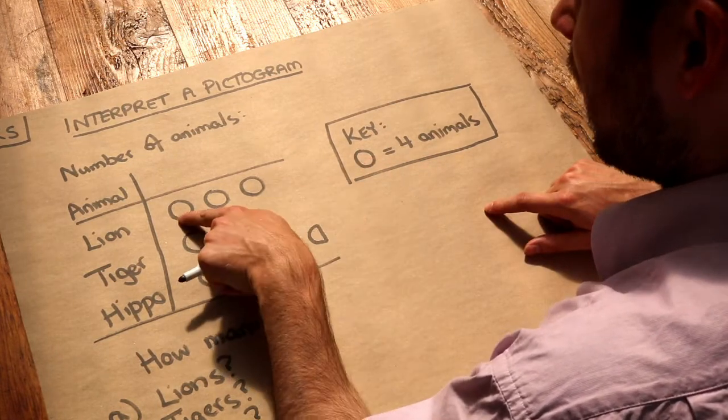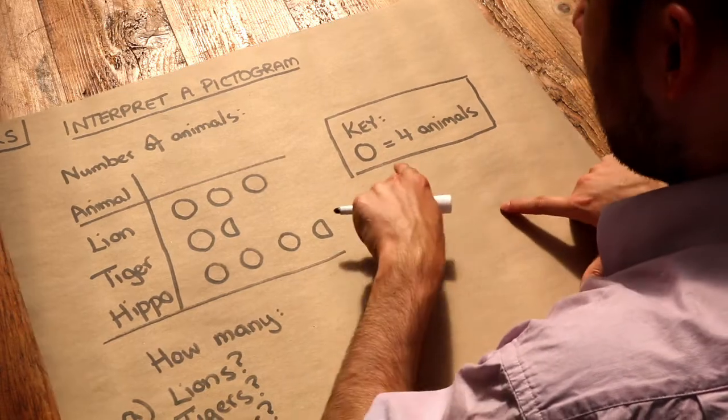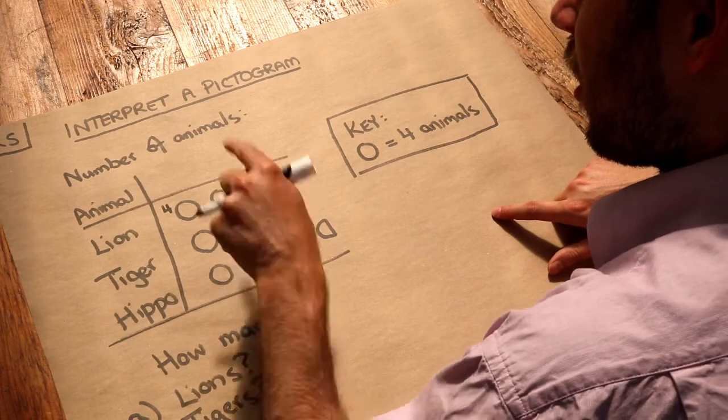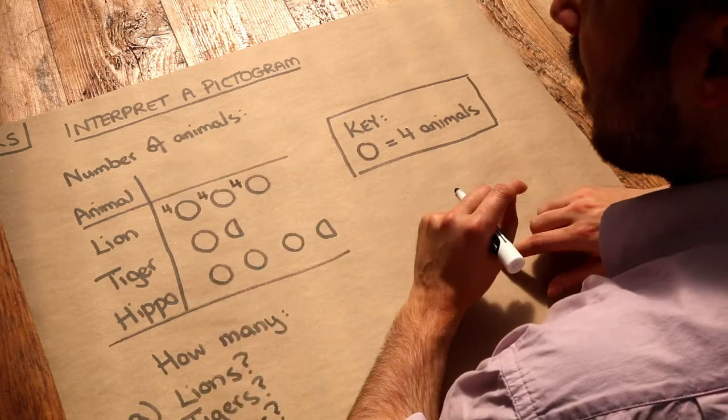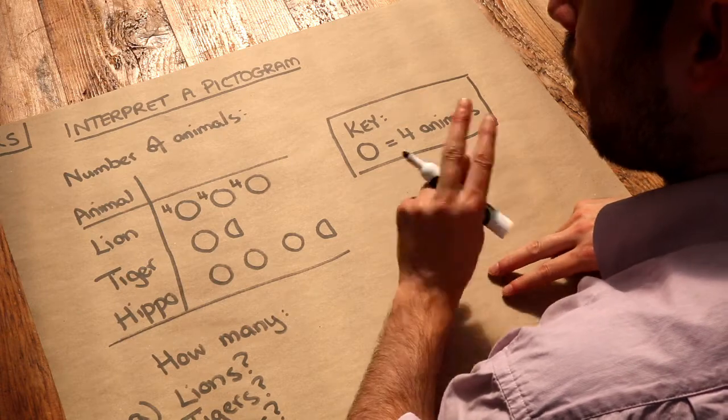We can see that each circle in this pictogram represents four animals. So here we've got one circle that's four animals, this circle represents another four animals, this circle represents another four animals, and that means in total we have four plus four plus four, which is twelve lions.